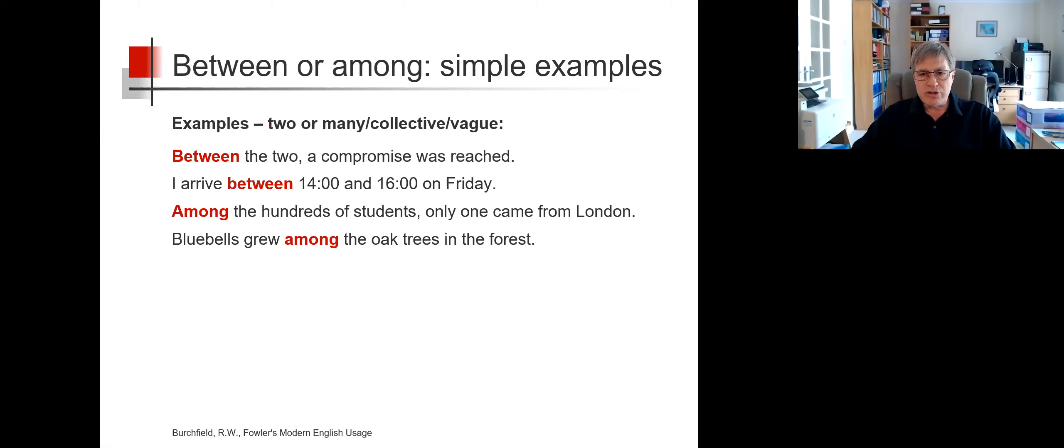So here are some examples using the simple rule. Between the two a compromise was reached. I arrived between 1400 and 1600 on Friday. Here we're talking about two times.